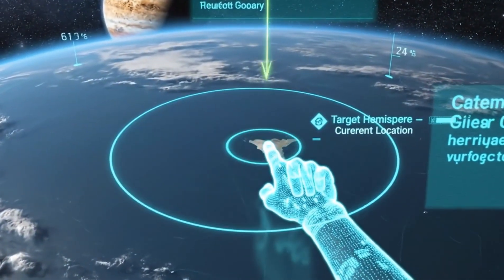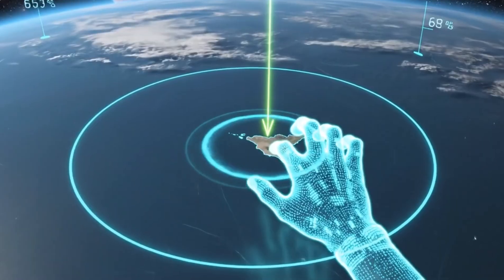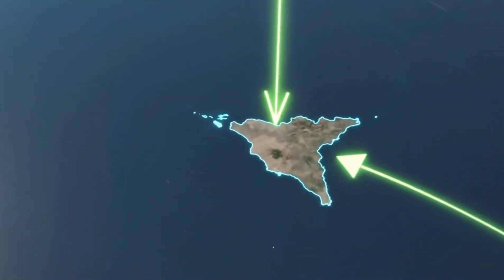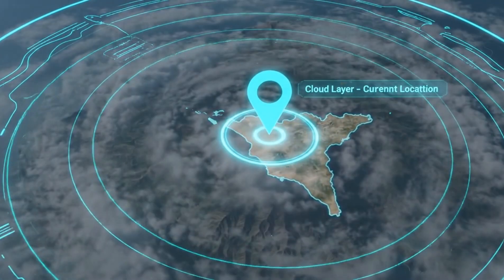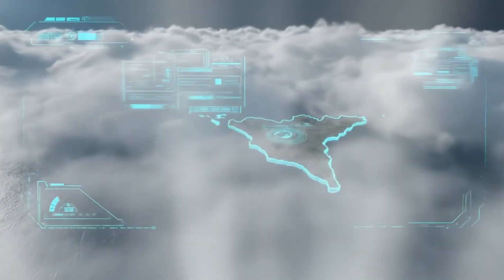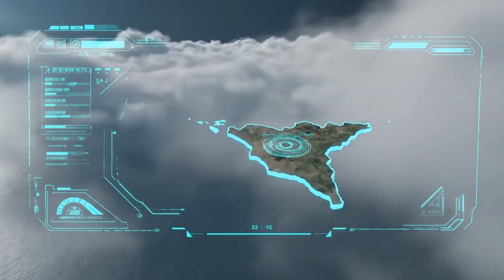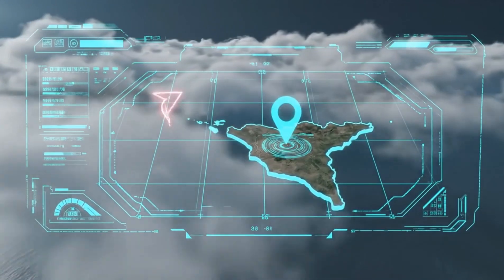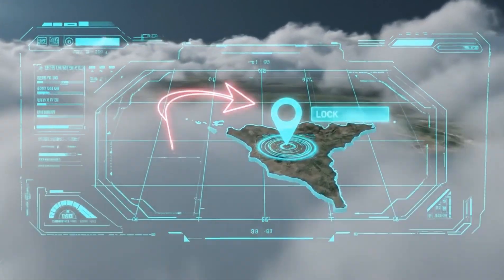Regional landmass identified. Preparing descent from global frame to surface scale observation. System check. Confirmation target. Active cloud field selected. Descending through upper atmosphere toward surface. Surface level target acquired. Transitioning from regional overview to local environment scale.